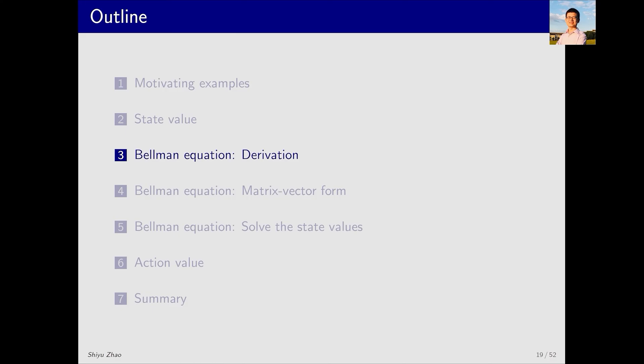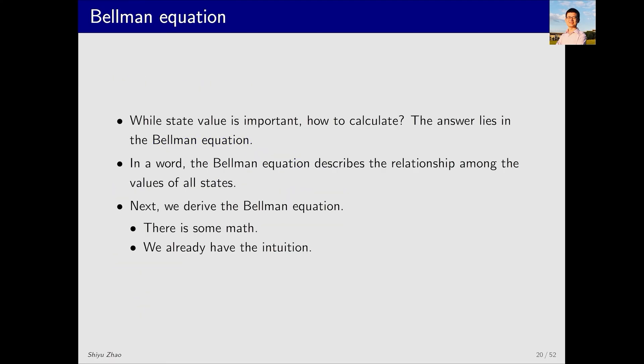Now, let's move on to the third part, the Bellman equation. First, we discuss how to derive the Bellman equation. We've already defined state value and demonstrated through examples why it's important. While state value is important, how to calculate it? The answer lies in the Bellman equation, which describes the relationship among the values of all states.